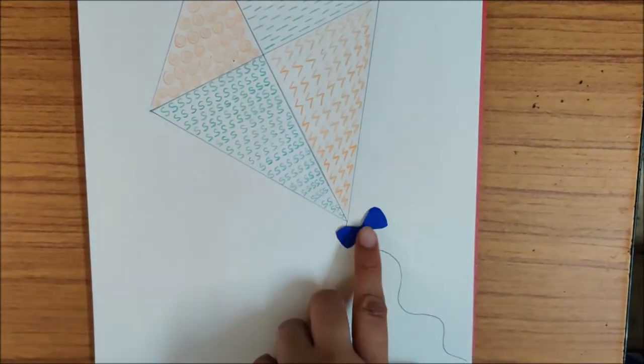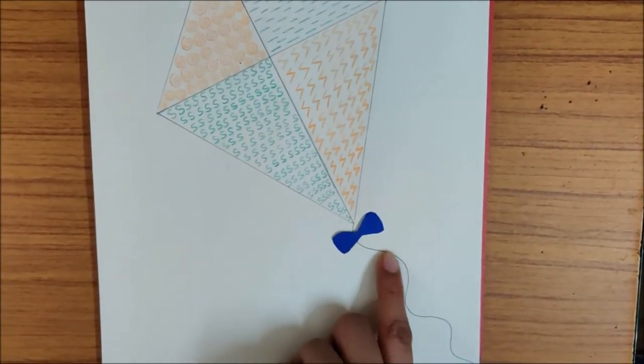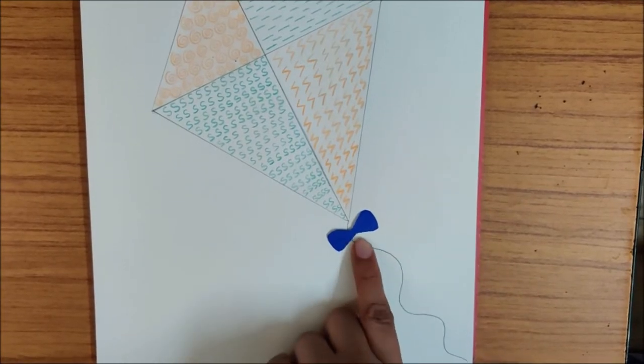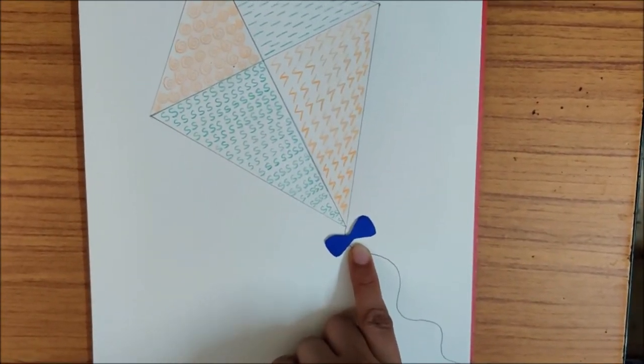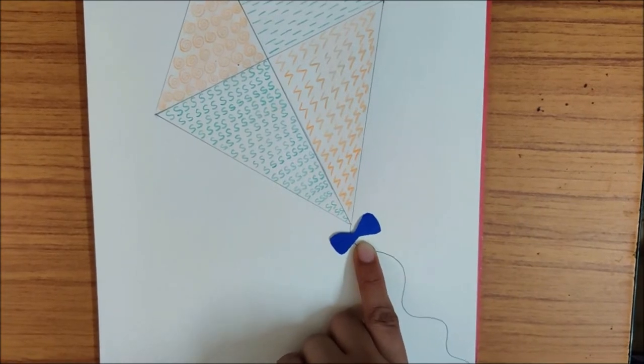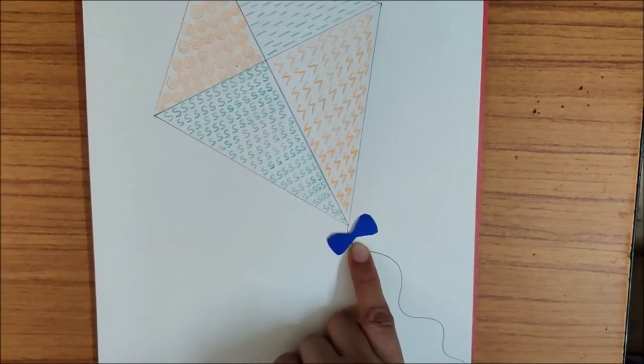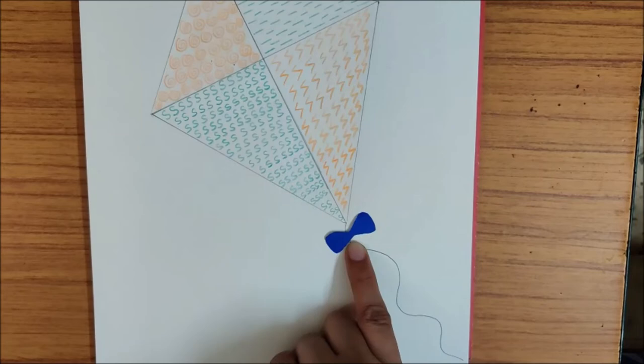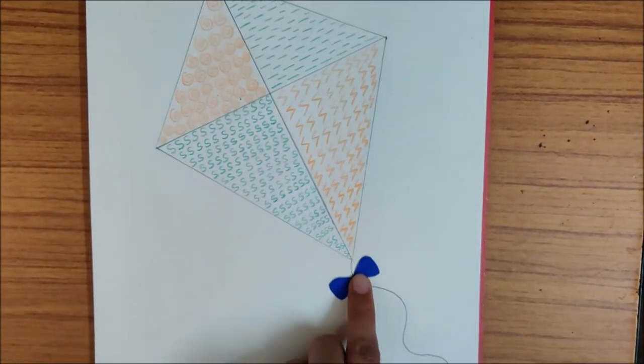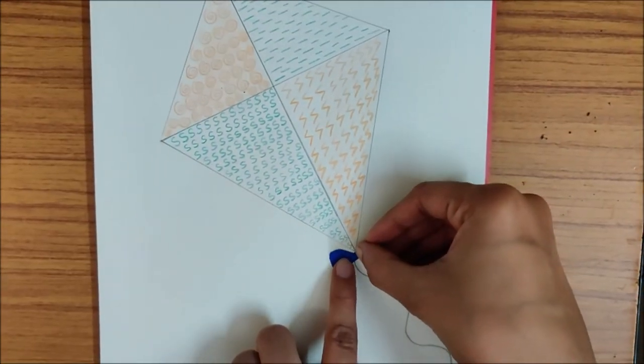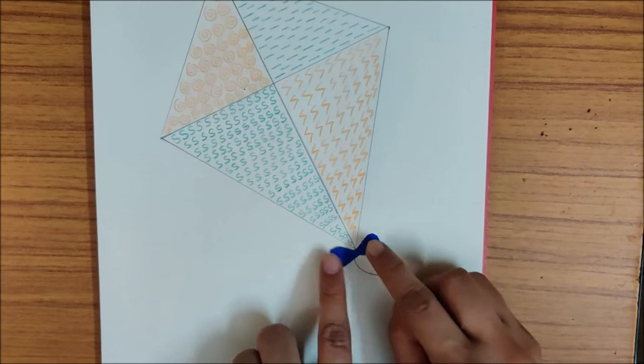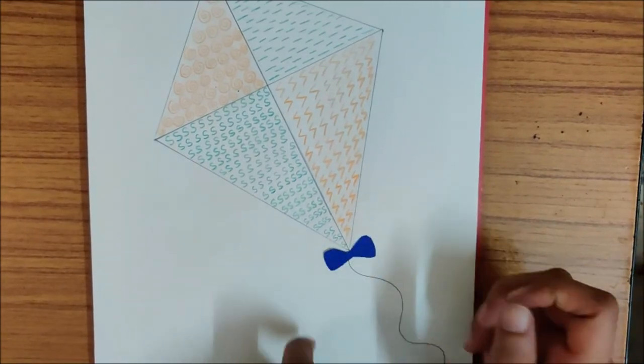Now I am going to stick blue bows on my string. Blue because this is the color of our Ashok Chakra, and we are making Independence Day Kite. So we are using orange, green and blue colors. You can ask your mum or papa to cut it for you. But sticking, you can do.